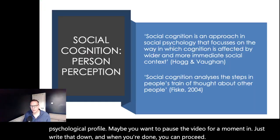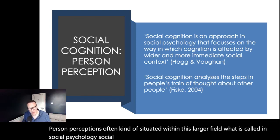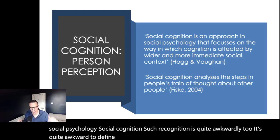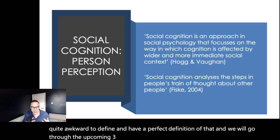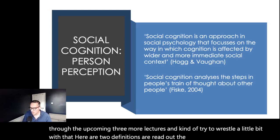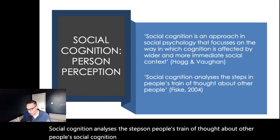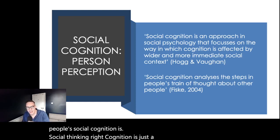Person perception is often situated within this larger field called social cognition in social psychology. Social cognition is quite awkward to define perfectly, and we will wrestle with that over the upcoming three lectures. Here are two definitions — I'll read the shorter one: social cognition analyzes the steps in people's train of thought about other people. So social cognition is social thinking; cognition is just a fancy word for thinking, and it tries to understand how we think about other people.